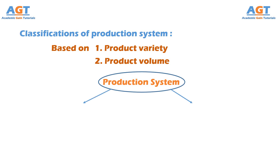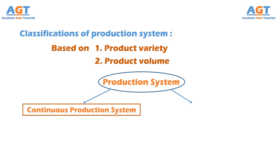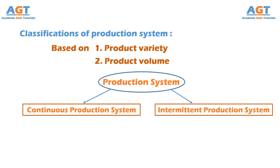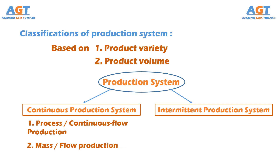Number 1: Continuous production process. Number 2: Intermittent production process. The continuous production system can be classified into two types: process or flow production, and mass production. Similarly, the intermittent production system can be classified into two types: batch production, and job shop production.